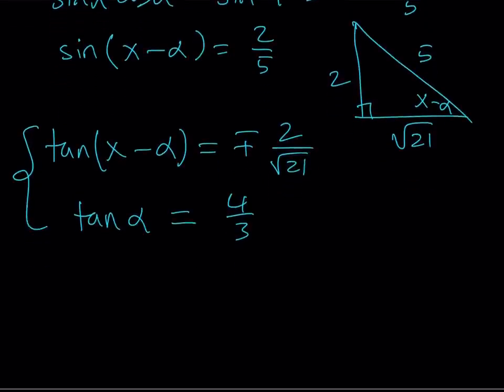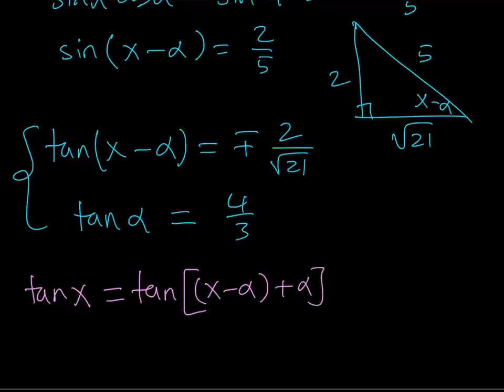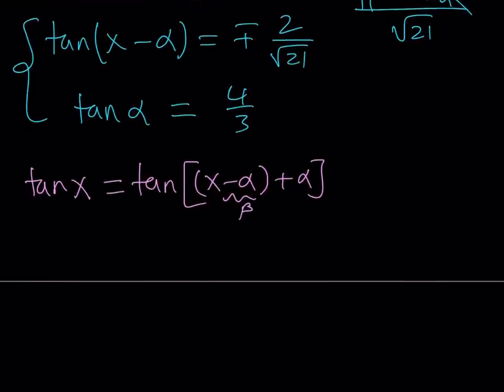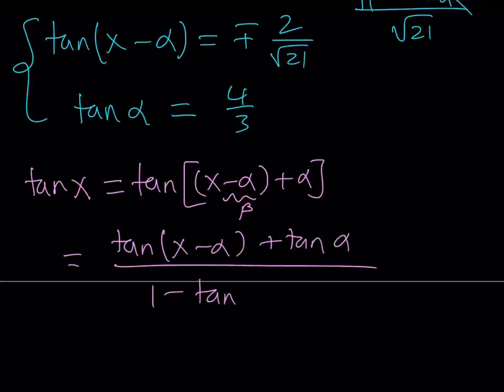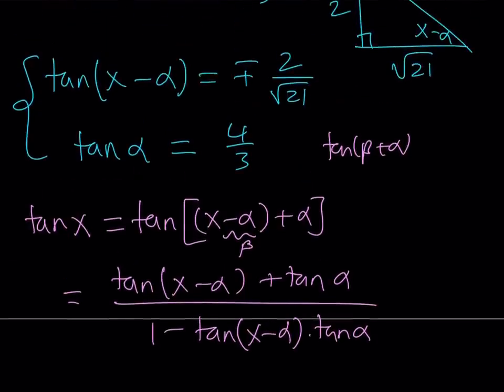Our goal is to find tangent x. I'm going to write tangent x as tangent of x minus alpha plus alpha, right? Alpha cancels and we get tangent x. We're looking at the sum formula for tangents. This is equivalent to tangent x minus alpha plus tangent alpha divided by 1 minus tangent x minus alpha times tangent alpha. I'm just using the formula tangent beta plus alpha, which is tangent beta plus tangent alpha divided by 1 minus tangent beta times tangent alpha.